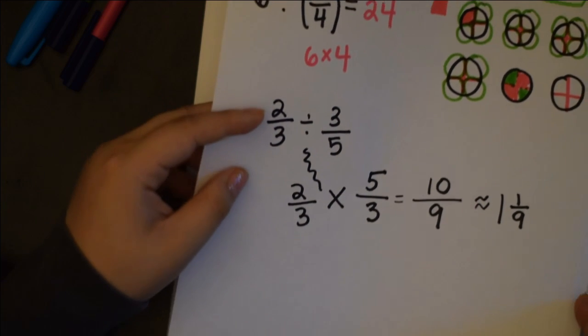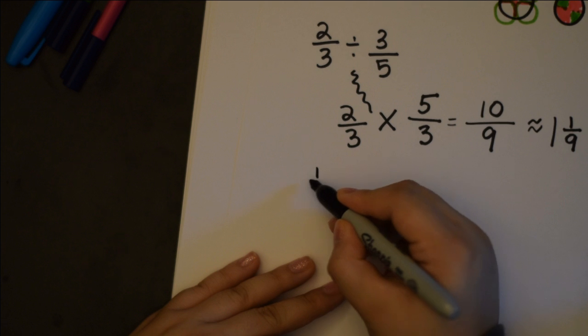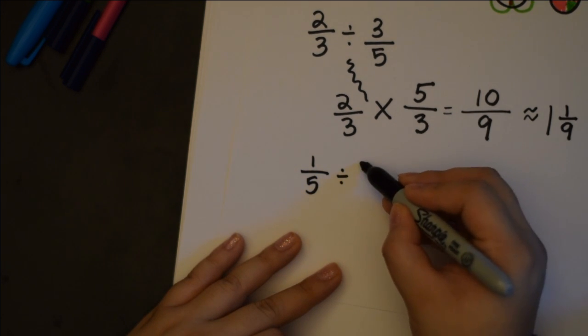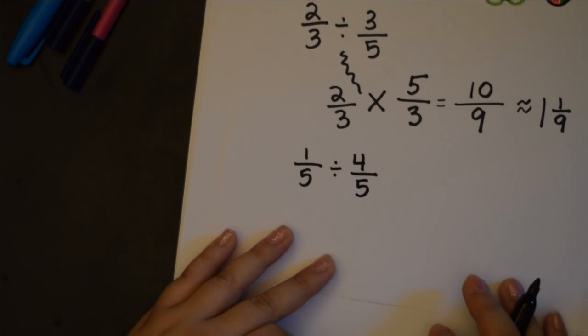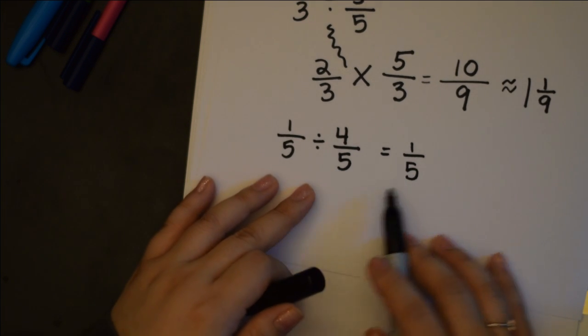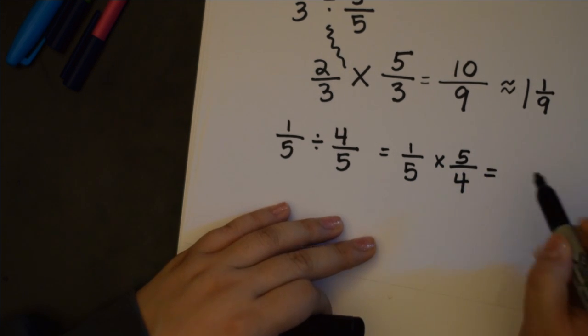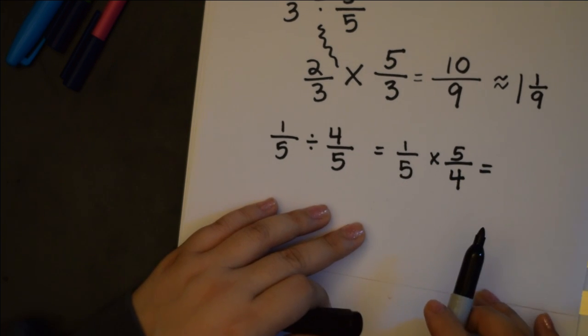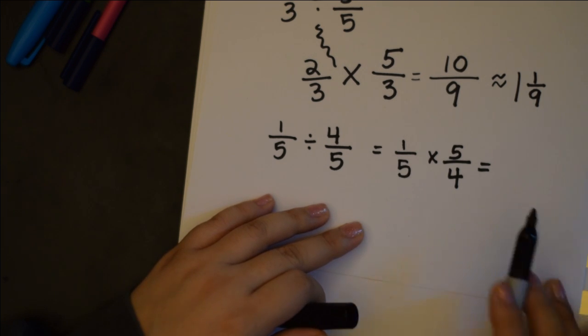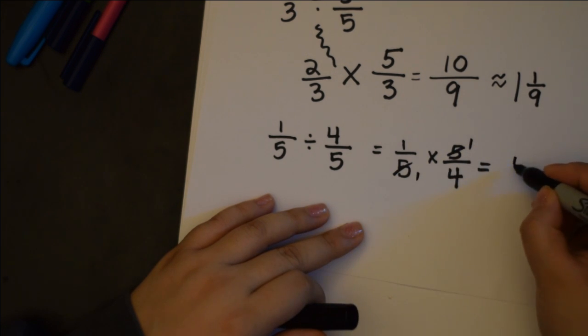So from here, you can just do all kinds of problems, any as you like. You can do one-fifth divided by four-fifths. So from here, you can do one over five, change or divide to a times, and then flip-flop the second, so five over four. And now, you can just multiply this however you are comfortable. Either multiply across, so five over twenty and simplify, or you can cross-cancel. So one, one, and you get one-fourth. Either way, the focus is going from divide to times, so just notice this pattern.